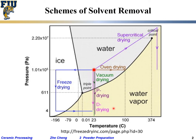This is a unary single-component phase diagram for water. The vertical axis is pressure and the horizontal axis is temperature. At one atmosphere, below zero degrees C water is ice; between zero and 100 degrees C it's liquid; and above 100 degrees C it's water vapor. As pressure changes, the boundary lines shift accordingly. There are different drying methods corresponding to different paths on this diagram.